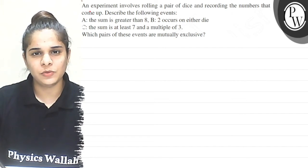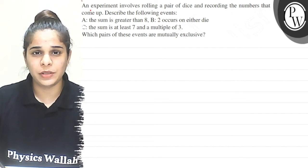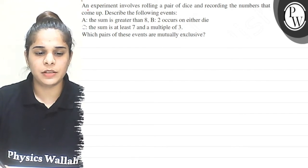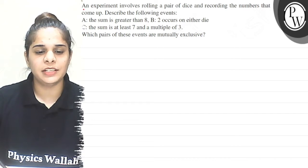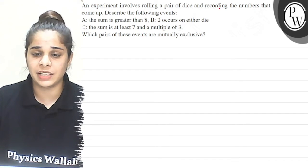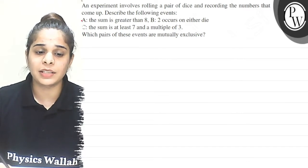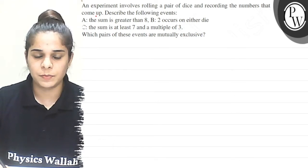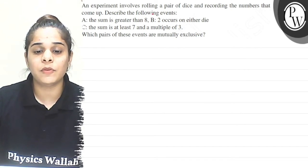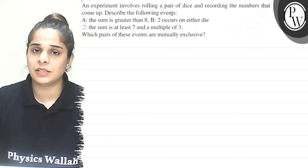Hello, Bacho. I hope you are doing well. The question we are going to do today is: an experiment involves rolling a pair of dice and recording the number that comes up. Describe the following events.